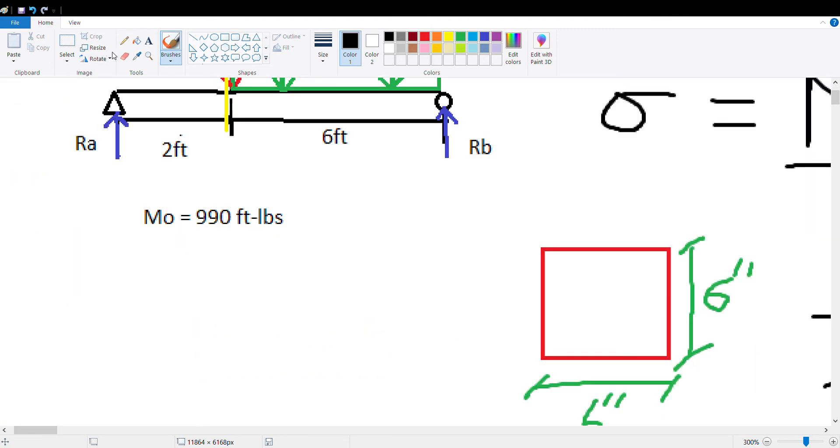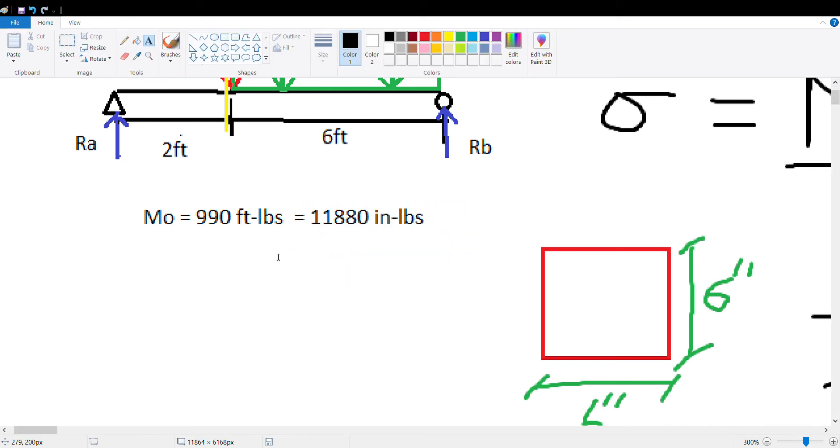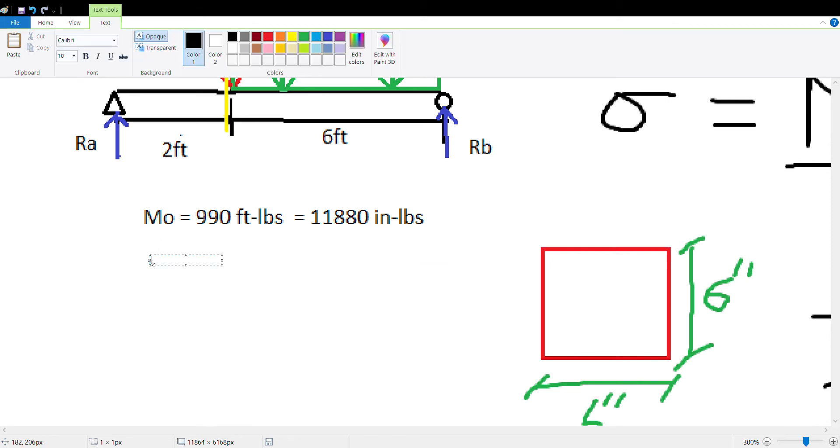Now you can just solve for the problem. So one thing you want to do here before you even start, you want to keep the units consistent. So normally for bending stress and pressures they use psi, which is pounds per square inch. So I'm going to convert this moment to, instead of foot-pounds, I'm going to do inch-pounds. All you got to do is multiply that by, this moment by 12.